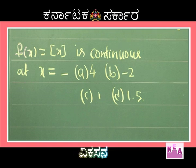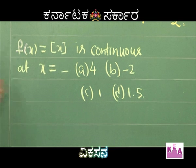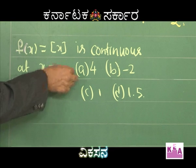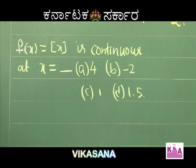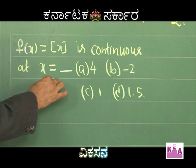From the same paper, we have one more question. f(x) equals the integral part of x — where is it continuous? The options are x equals −4, −2, 1, and 1.5. You can easily understand this if we draw the graph of the greatest integer function.